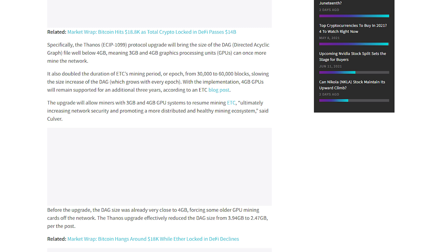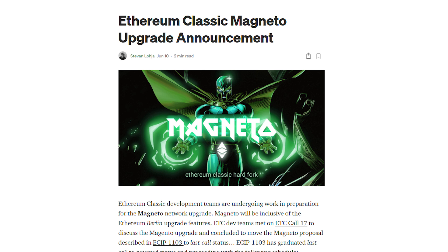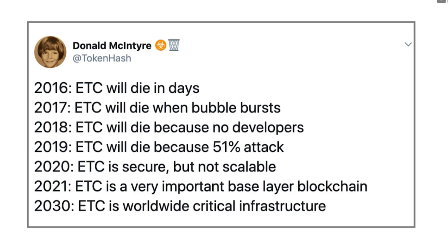Ever since the Thanos upgrade that happened in November, drastically increasing the network health and security, there's another even stronger upgrade coming — called the Magneto upgrade. Ever since 2016, people have been saying Ethereum Classic will die, but as you can see, it's still here and only getting stronger with more upgrades, performing better than a majority of altcoins.